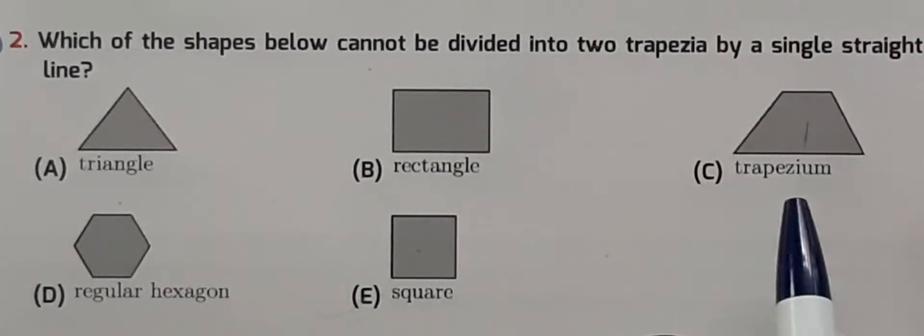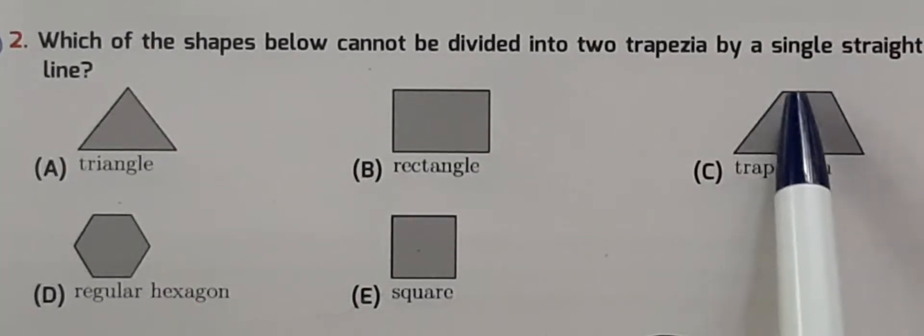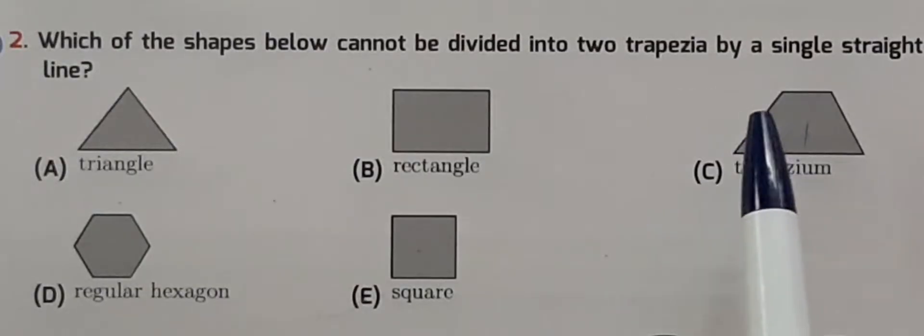This is a trapezium, and if we divide it in half, it makes trapeziums. A trapezium is a shape which has four sides—one, two, three, four—and two sides are parallel to each other and are not equal to each other. This is called a trapezium.